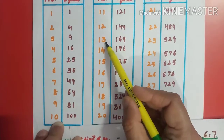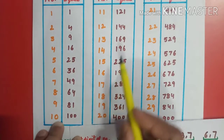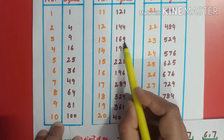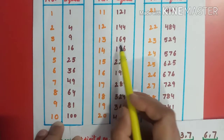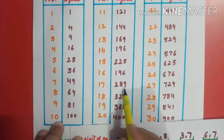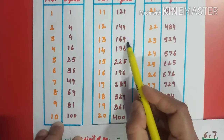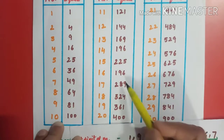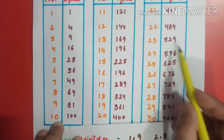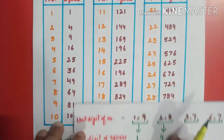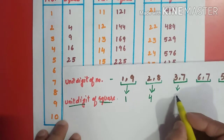If any number ends in 3 or 7 — like 13 or 17 — the unit digit of the square is 9. For example, 13 square is 169 and 17 square is 289 — both end in 9. You can also check 23 and 27 — their squares also end in 9. So any number ending in 3 or 7 will have its square ending in 9.